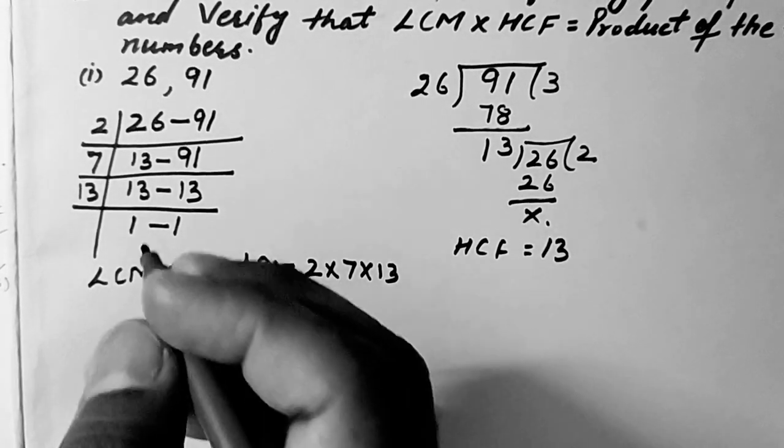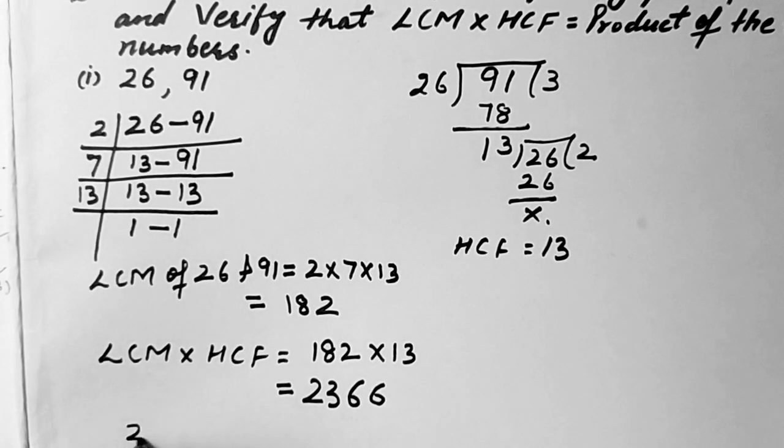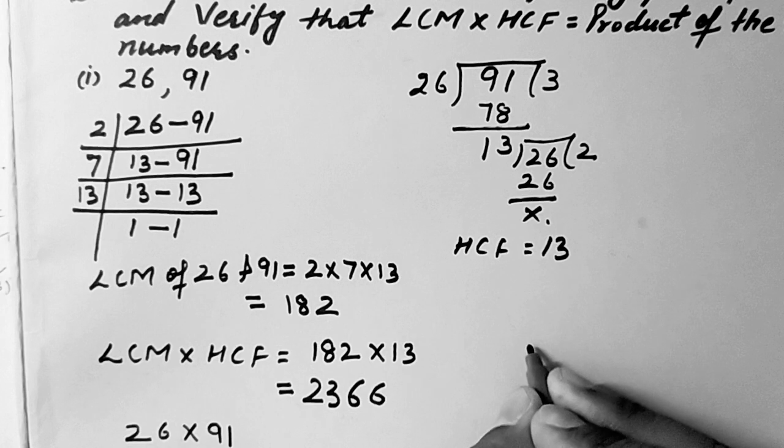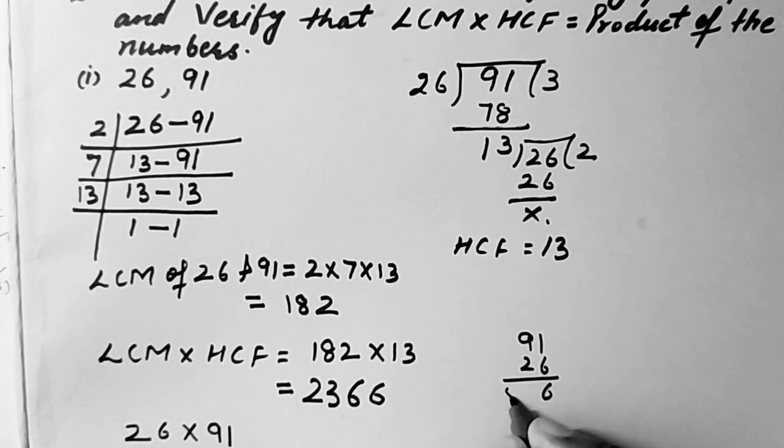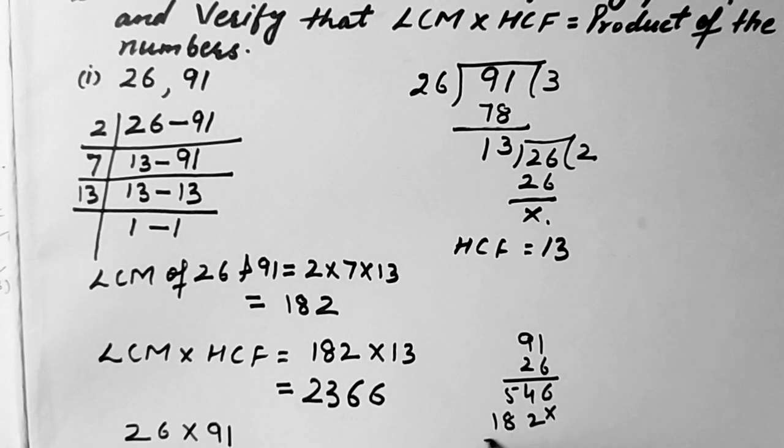Now we will find the product of these two numbers. So that is 26 into 91. So we can multiply here aside, 91 into 26. So this is 2 ones are 2, 2 nines are 18.